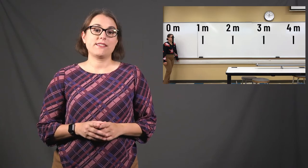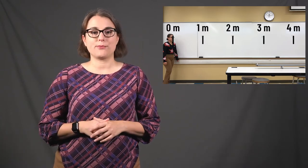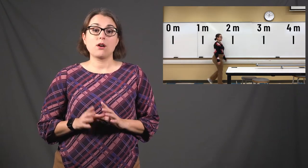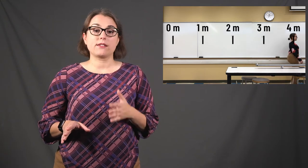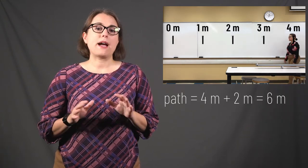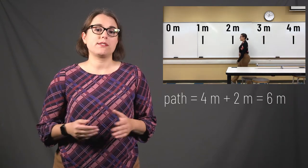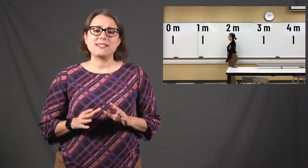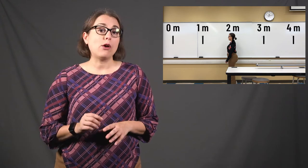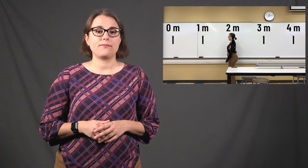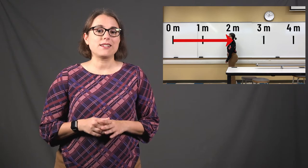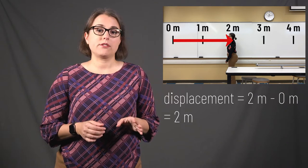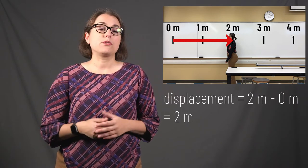Let's go back to the example of me walking around the physics classroom. This time, I start at the 0 meter mark, walk to the 4 meter mark, and then go back to the 2 meter mark. My path describes the total distance that I walk, which is 6 meters. However, my displacement only considers how far I moved relative to my initial position. Displacement is delta x: final position minus initial position, so 2 meters minus 0 is equal to 2 meters.